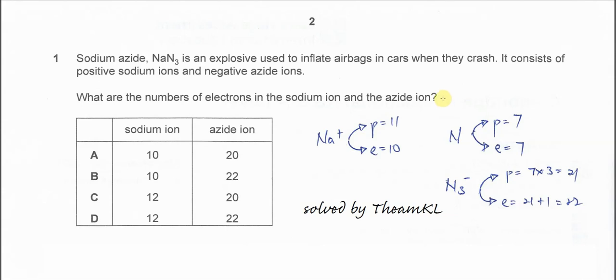Question 1. In this question we need to determine the numbers of electrons in the sodium ion and the azide ion in sodium azide. Sodium ion is Na positive and azide is N3 negative.